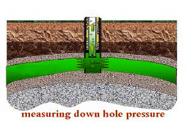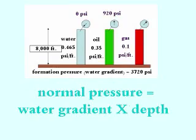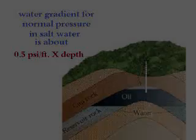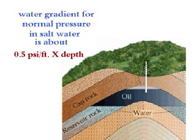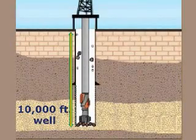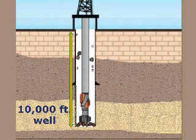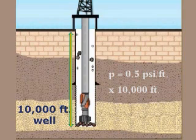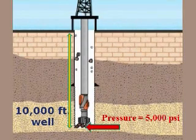In drilling for oil, we use the following mathematical formula for approximating bottom hole pressure: normal pressure equals the water gradient times depth. The water gradient for normal pressure in salt water equals about 0.5 PSI per foot. It will change slightly with salinity, but 0.5 PSI per foot is a good approximation. For those who use the metric system, 3.28 feet equals 1 meter. So using our formula, what is the pressure at the bottom of a 10,000-foot well? It is P equals 0.5 PSI per foot times 10,000 feet, which gives us 5,000 PSI.